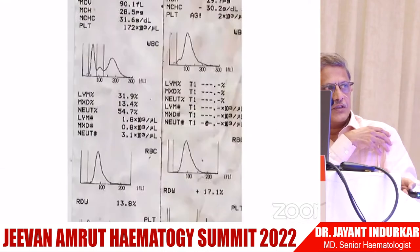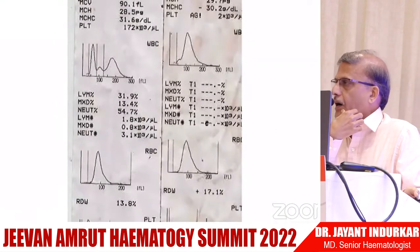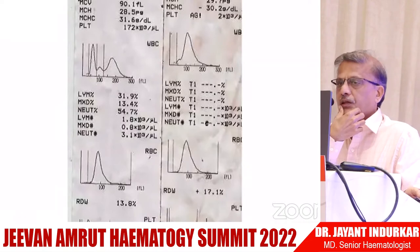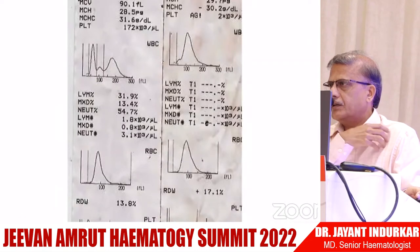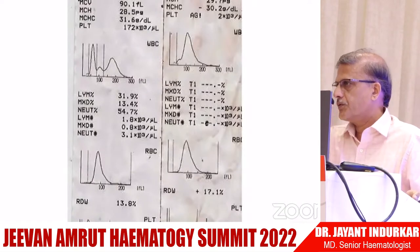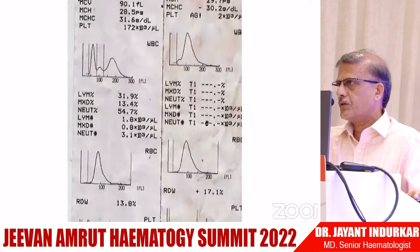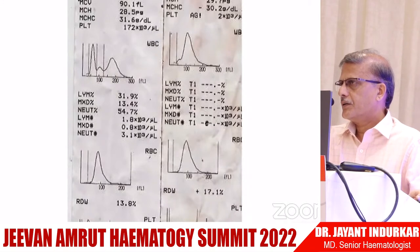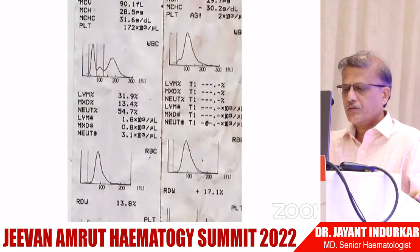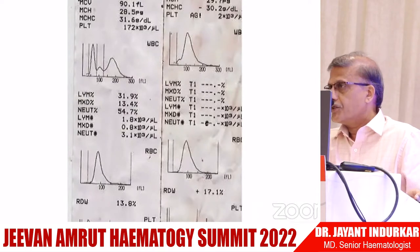Here is another case with a normal histogram. The patient has anemia, thrombocytopenia, and an elevated WBC. On the three-part differential, there is a population in the middle region where eosinophils, monocytes, and basophils usually fall — but these are not eosinophils, because there is anemia and thrombocytopenia. So this has to be a case of leukemia.